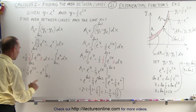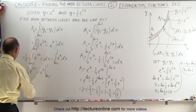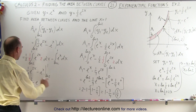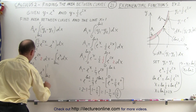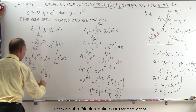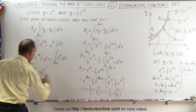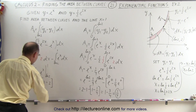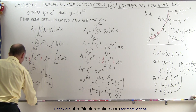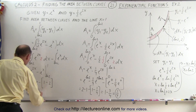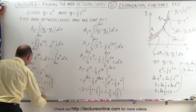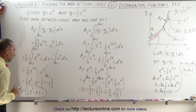Integrating gives 1 quarter e to the 2x minus e to the x, evaluated from the natural log of 2 to 1. Plugging in the upper limit: 1 quarter e squared minus e. Plugging in the lower limit: e to the twice the natural log of 2 is 4, times 1 quarter equals 1; and e to the natural log of 2 equals 2. So we subtract 1 minus 2, giving minus 1 times negative 1, which is plus 1. So A2 equals 1 quarter e squared minus e plus 1.